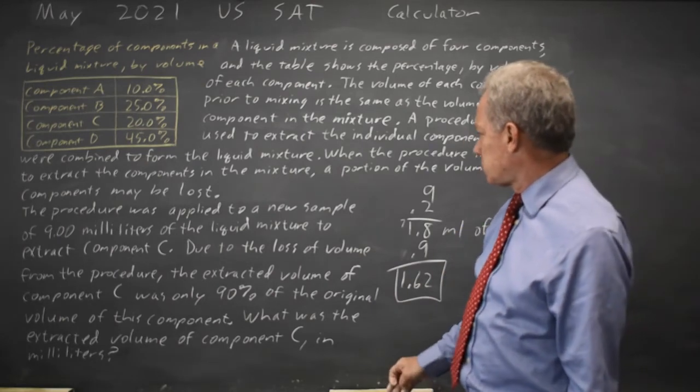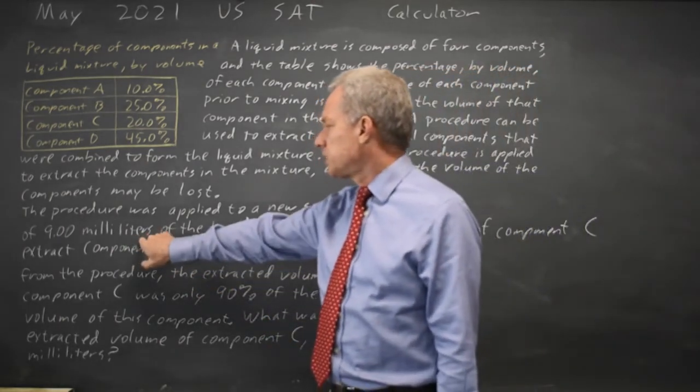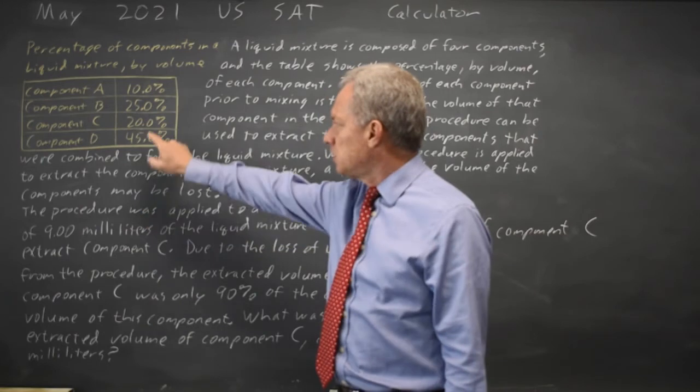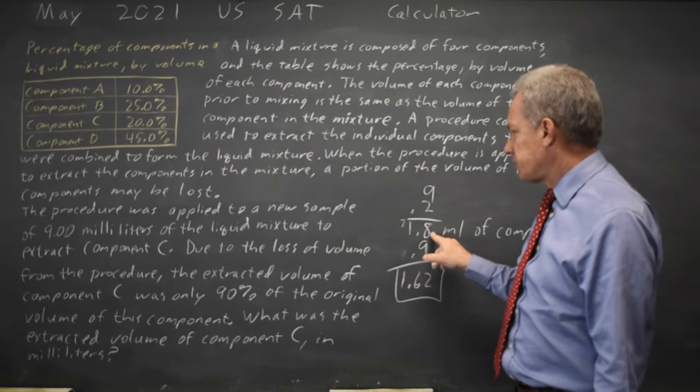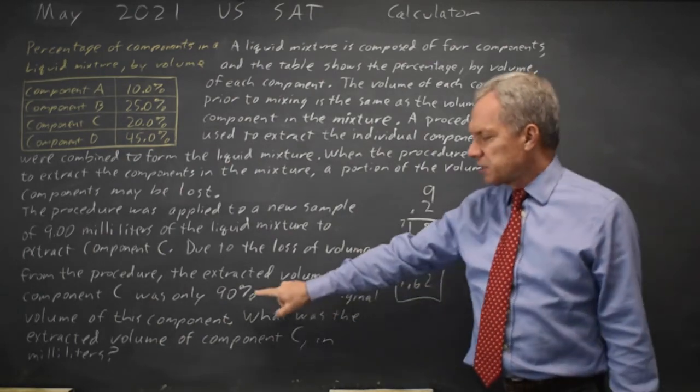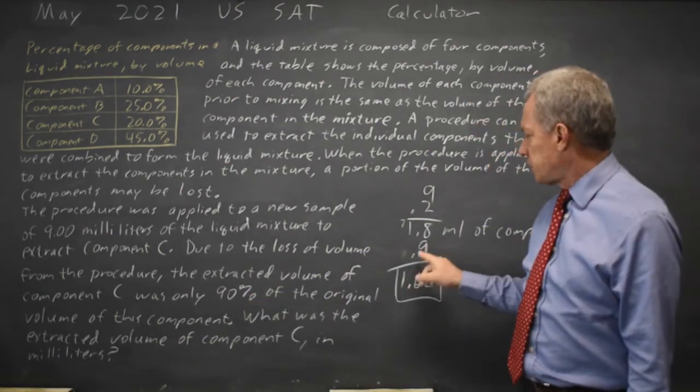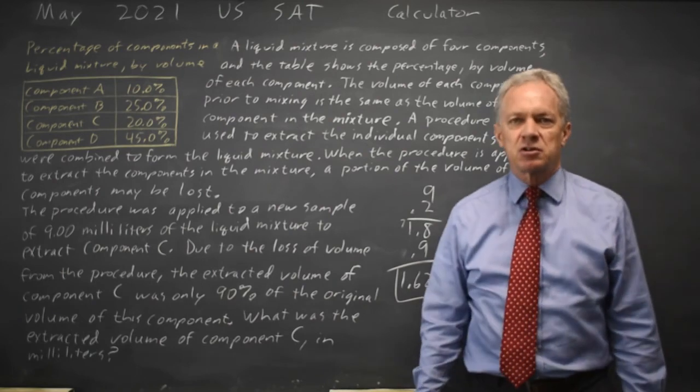We have to go step by step. We start with 9 milliliters of solution, 20% is component C. 0.2 times 9 gives us 1.8 milliliters of component C, but we only extract 90% of that, and 0.9 times that 1.8 gives us our final answer.